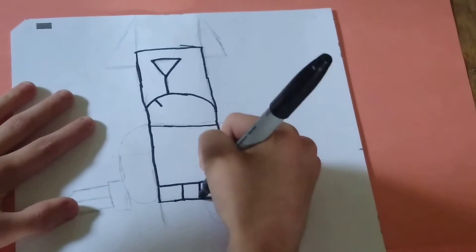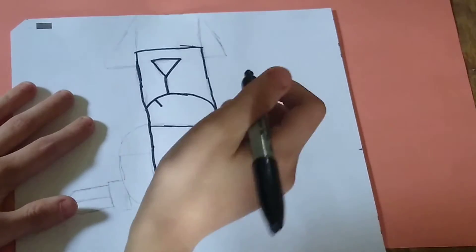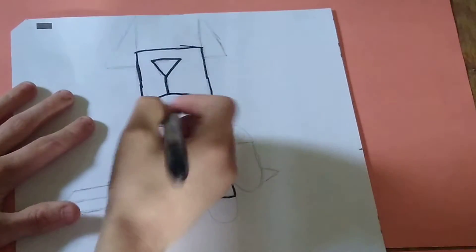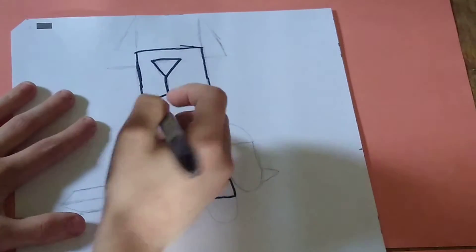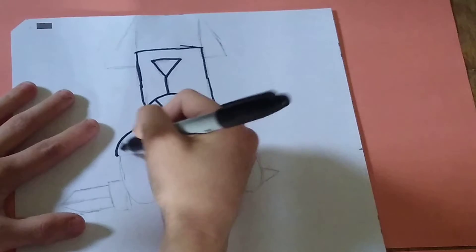Then you just add two little lines here. Now we're going to make the arms. You make this little shape like that.